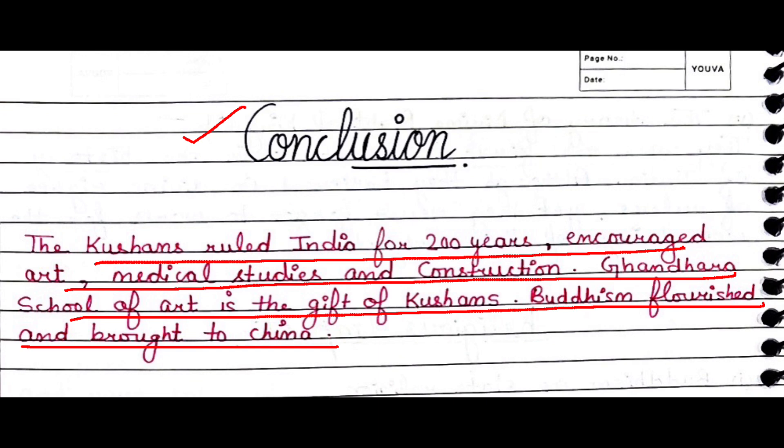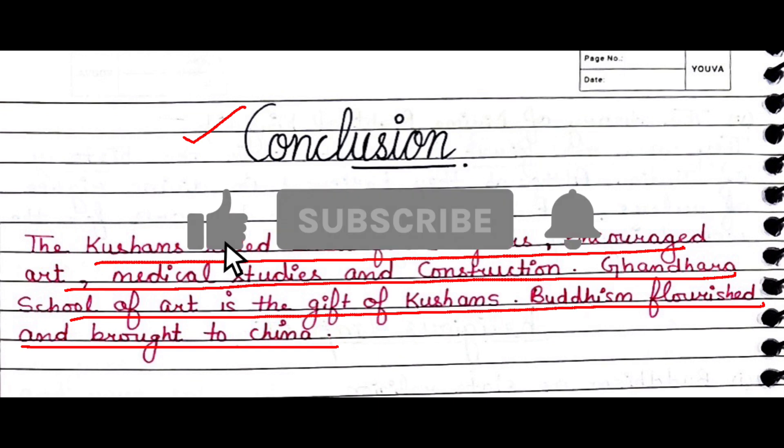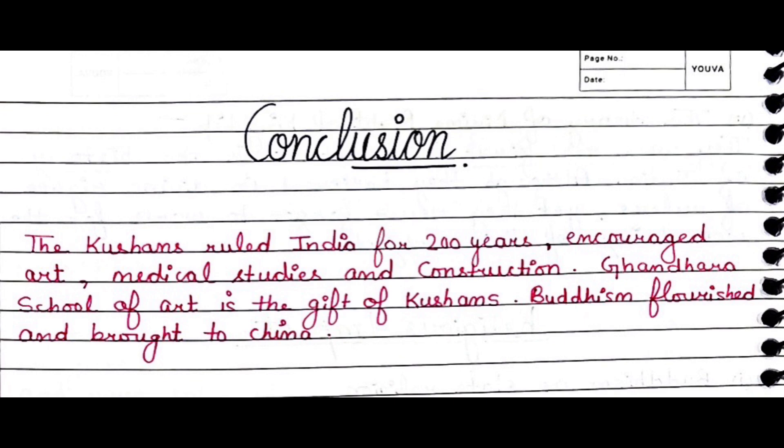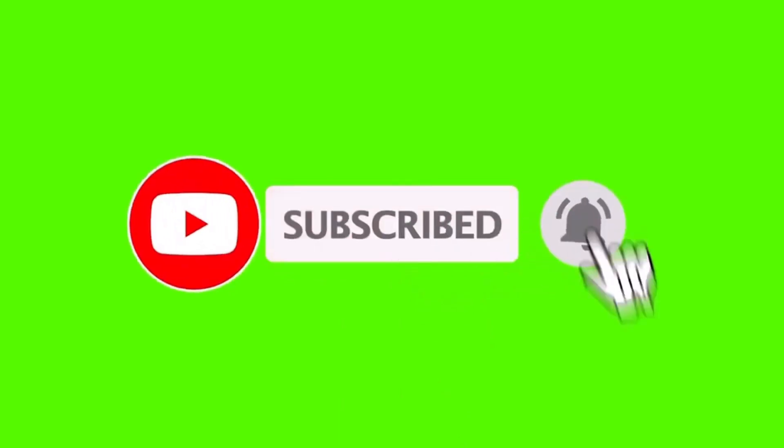For the conclusion, write four to five important lines: the Kushan Empire lasted about 200 years in India, during which art, medical studies, and construction developed. The Gandhara school of art was a gift of the Kushans. We can say that the Kushan Empire was very prosperous. Please like and subscribe the channel. I hope you find this video informative and helpful. If you have any doubt related to this video or your syllabus, please comment below. All the best, achievers — have a nice day.